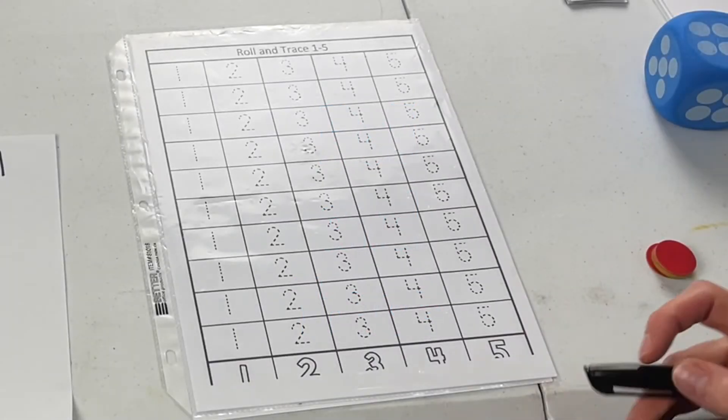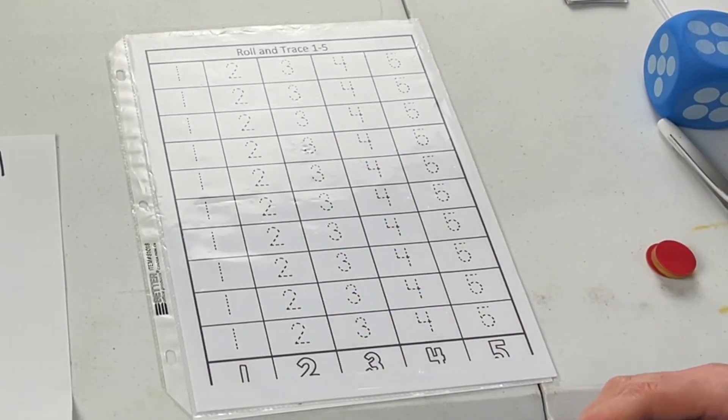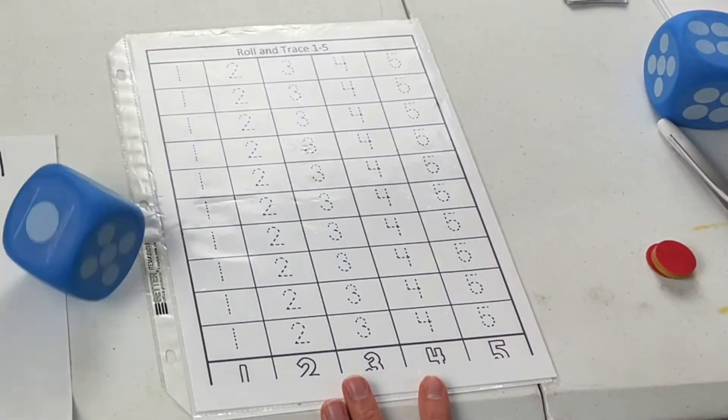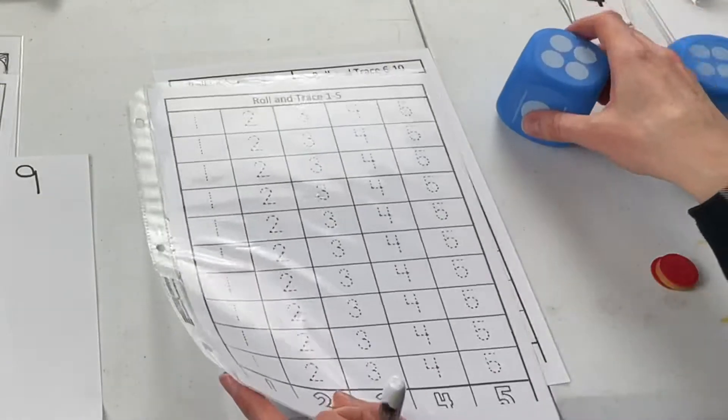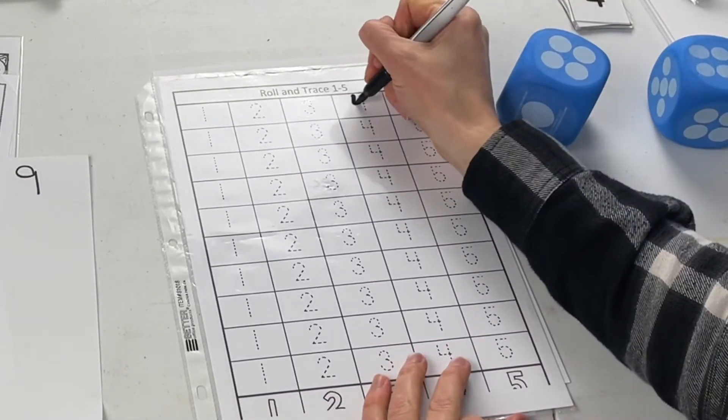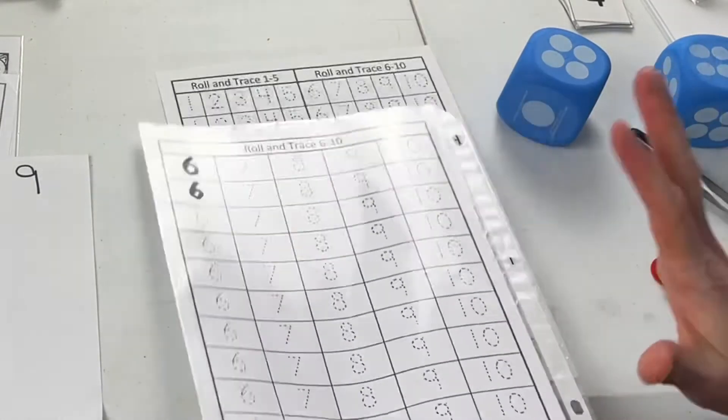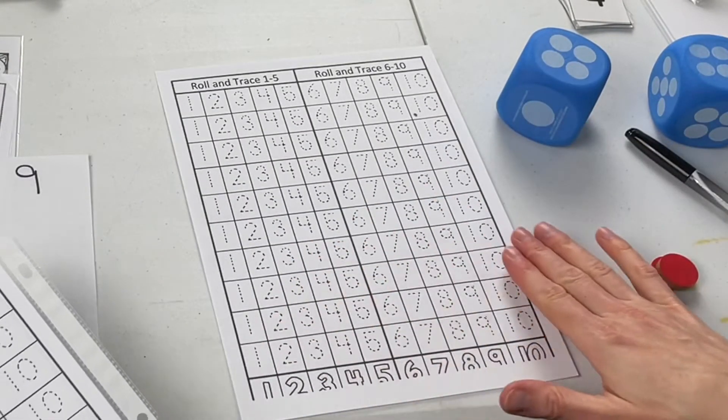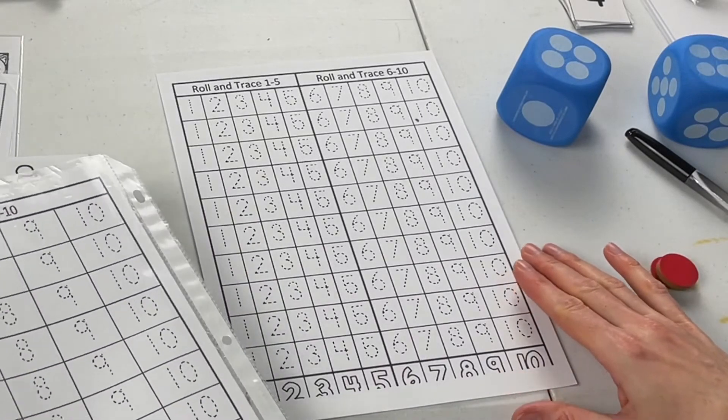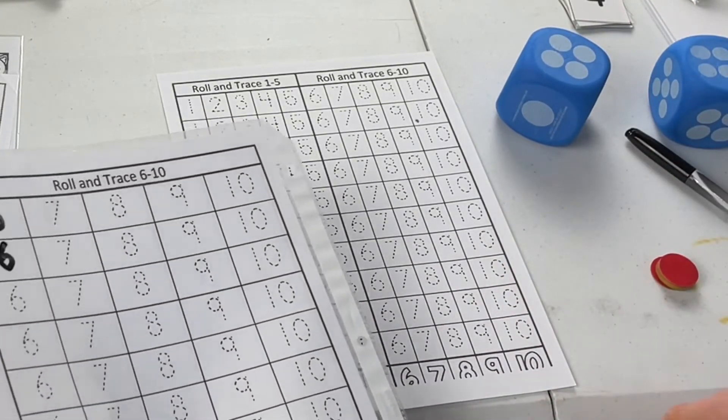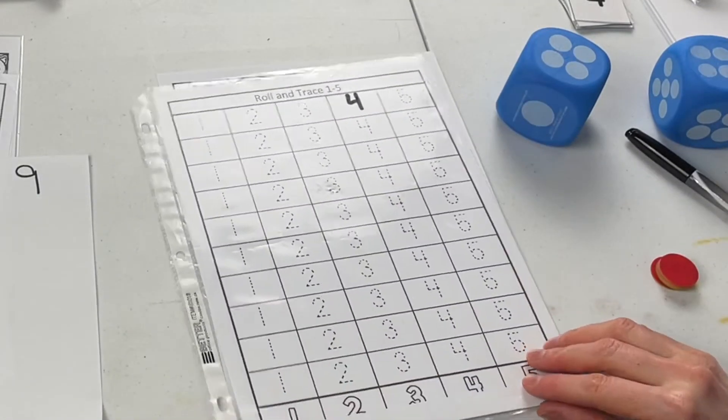This is roll and trace. This one's great for those younger kiddos getting their fine motor skills too as they learn to write their numbers. So you've got them larger with one to five, six to ten, and then there's one with one through ten on there as well. They might get an 11 or 12. I guess they can have a bonus and pick writing whichever one they want.